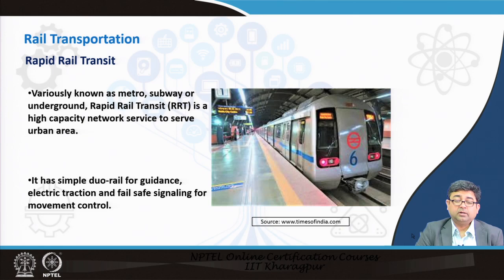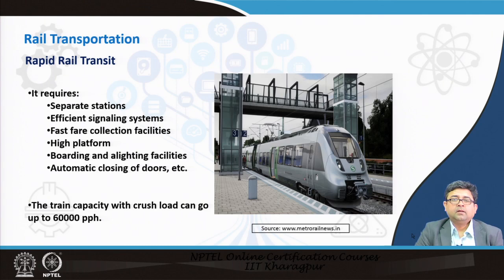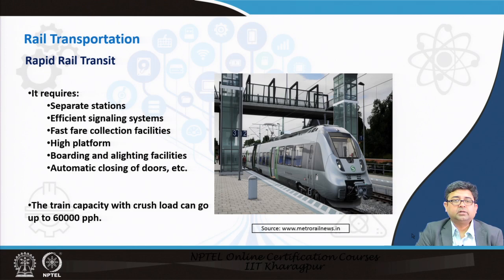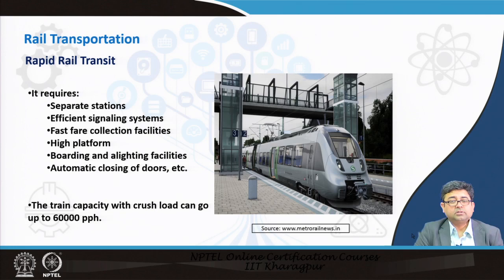The New Delhi metro rail network is one of the most widely reaching networks in the country. Within the metro rail system, there are specific subsystems: it has to have separate stations, much more efficient signaling systems, specialized fare collection systems, and boarding and alighting facilities controlled through automated doors. The capacity of suburban rail was 20,000 to 40,000 passengers per hour per direction, whereas metro rail can take up to 60,000 passengers per hour at peak.